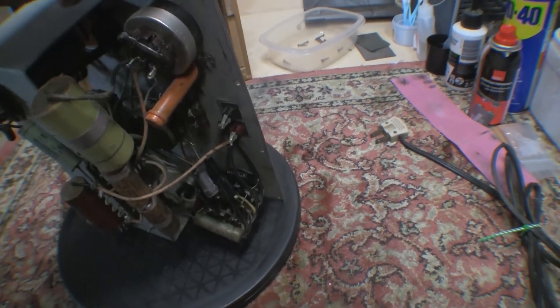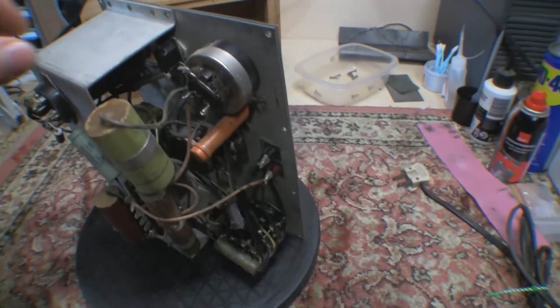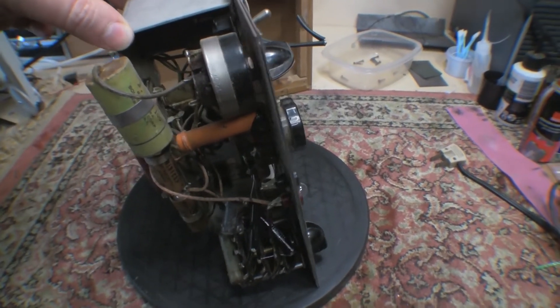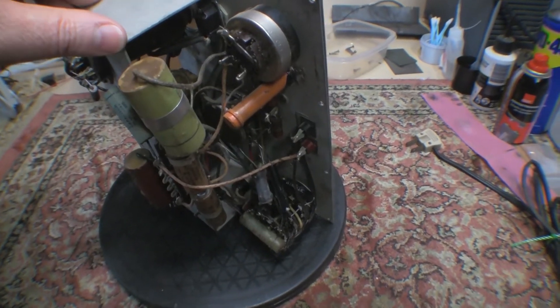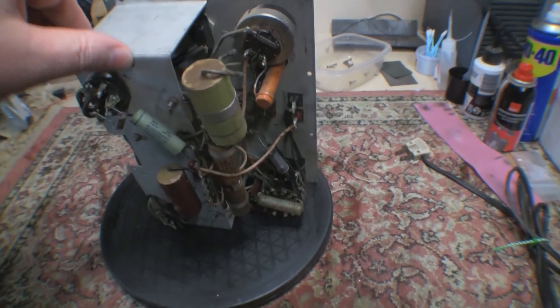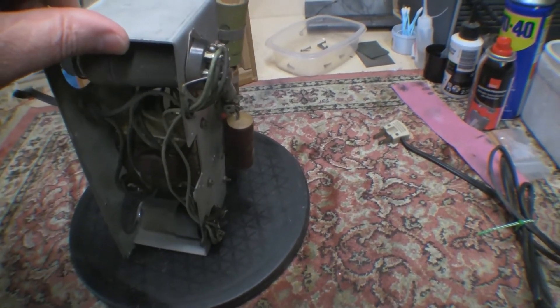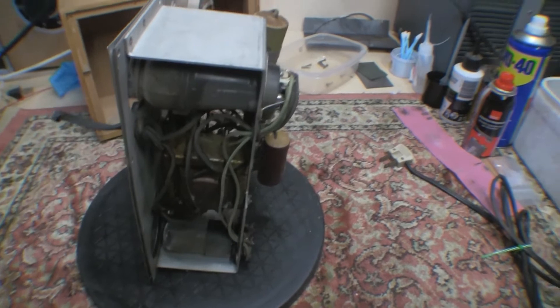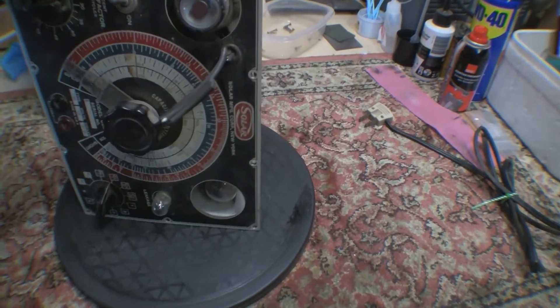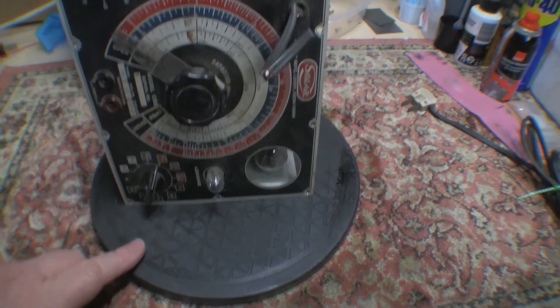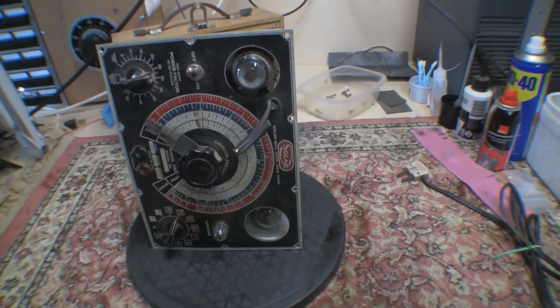I guess I'll change all the caps in here, check all the resistors. According to the manual everything should be 2% tolerance. I may not be able to find everything I need at that level but even if I put in regular components, it'll be good enough for what I need which is primarily just leakage testing on the different caps.